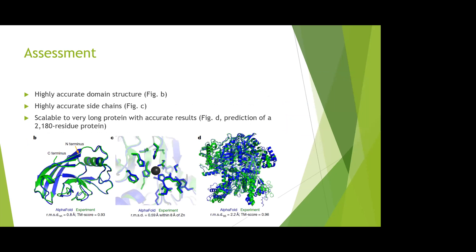They also show some qualitative results. First, they can predict highly accurate domain structure. The green structure in figure B is the accurate protein structure generated from simulation, and the blue structure is the predicted structure from AlphaFold.